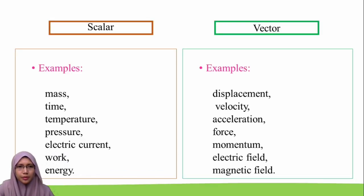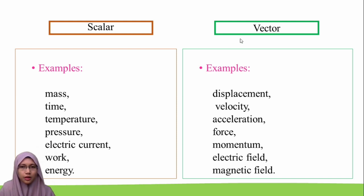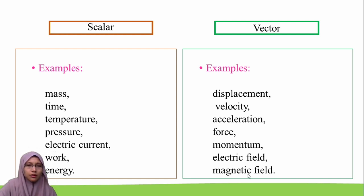Here are examples of scalar and vector quantities. Scalar quantities include mass, time, temperature, pressure, electric current, work, and energy. Vector quantities include displacement, velocity, acceleration, force, momentum, electric field, and magnetic field.